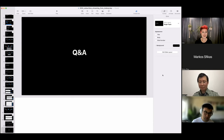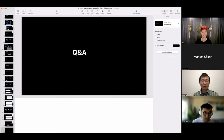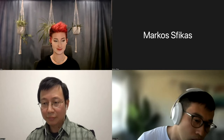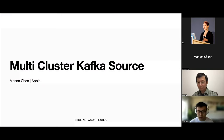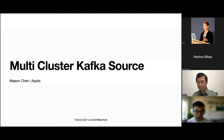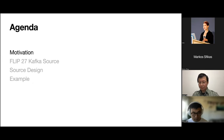Thanks everyone for joining. I'm Mason Chen. I work on the stream processing platform here at Apple with Steven. Today I'm going to talk about our own source connector that we developed, which extends the FLIP-27 source to improve the scalability, operability, and availability of Flink Kafka consumers. First we'll talk about the motivation and context for what problem we're trying to solve with this new Kafka source.